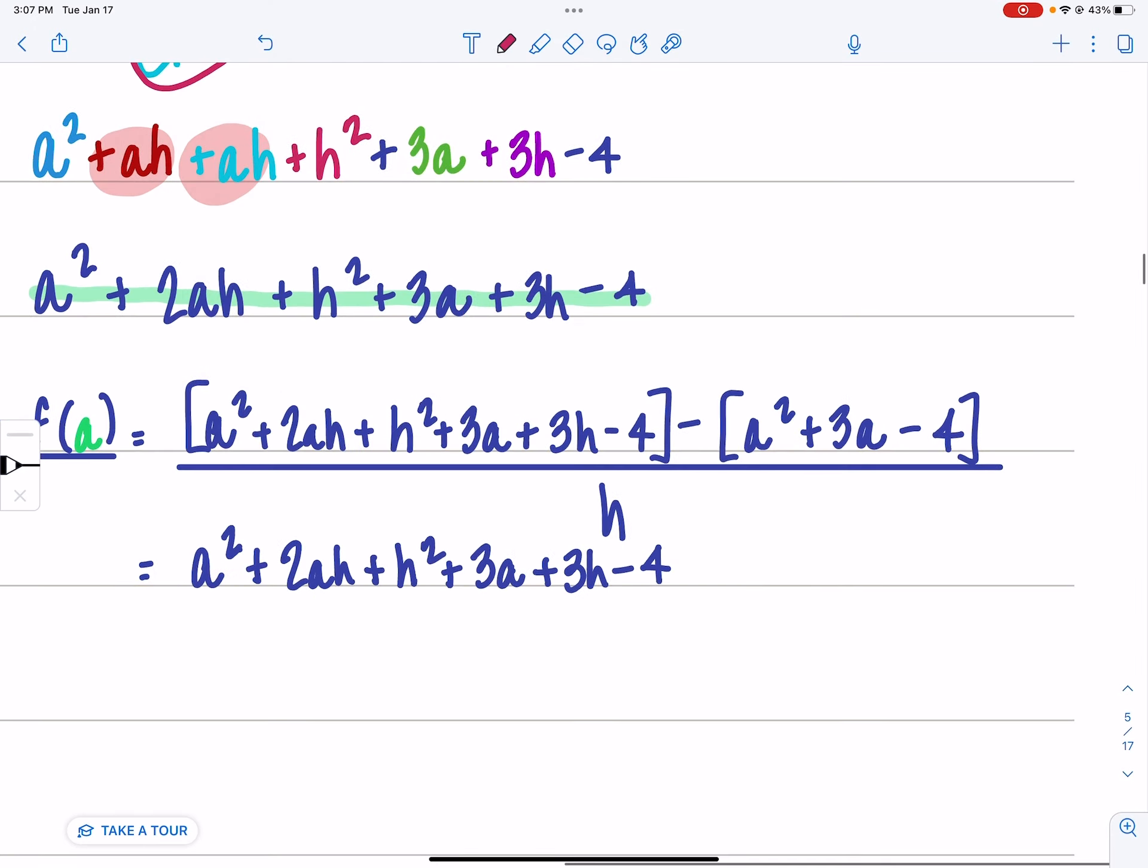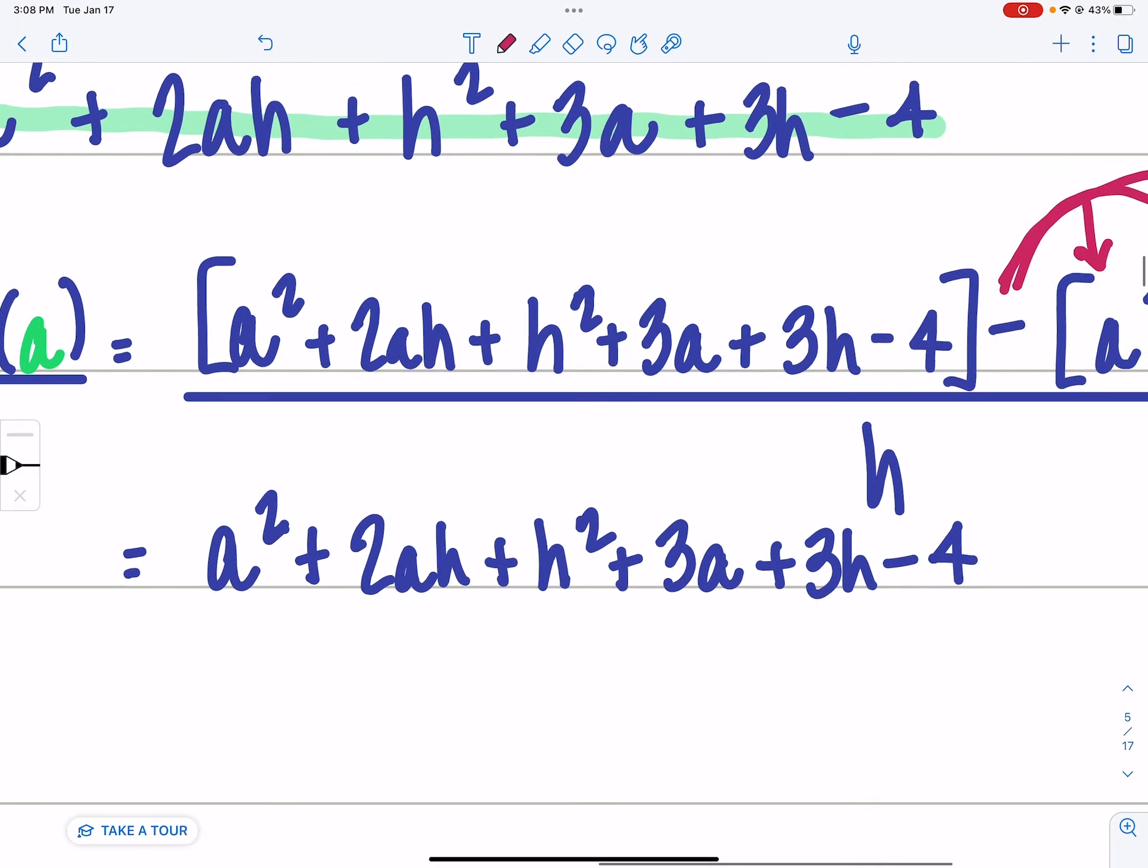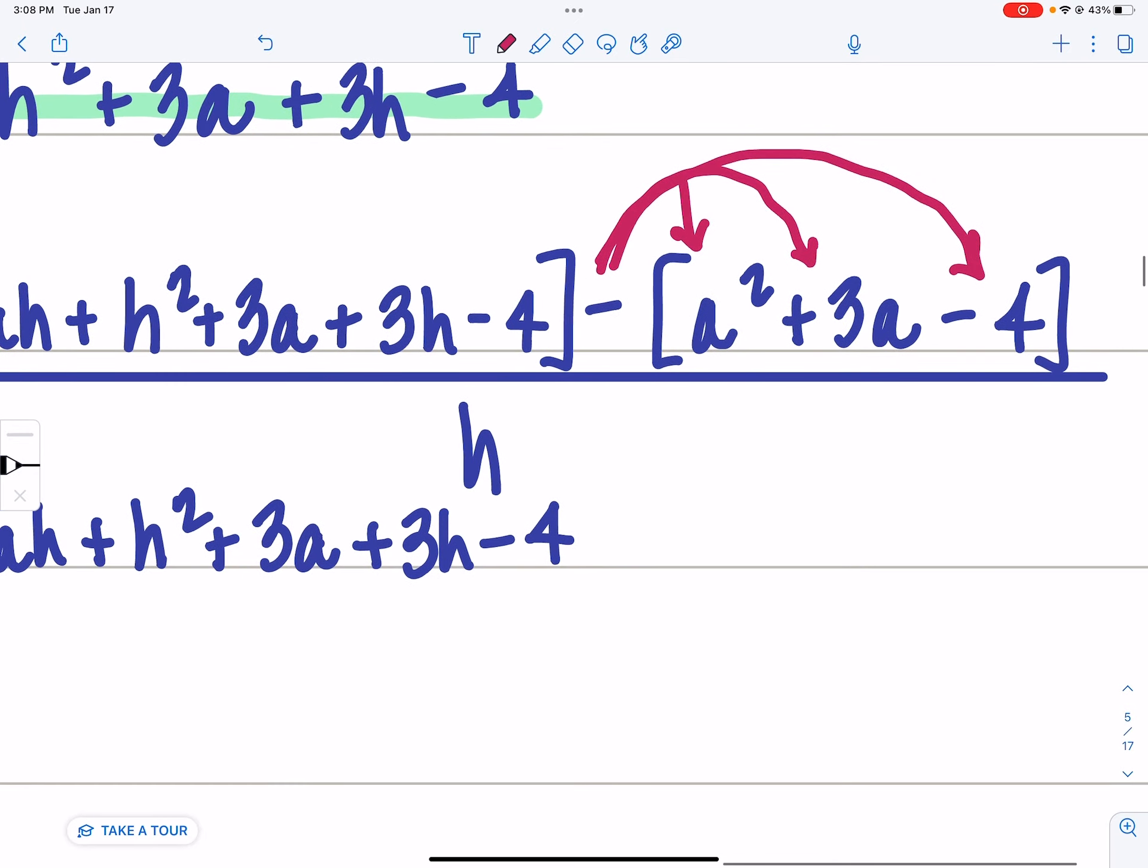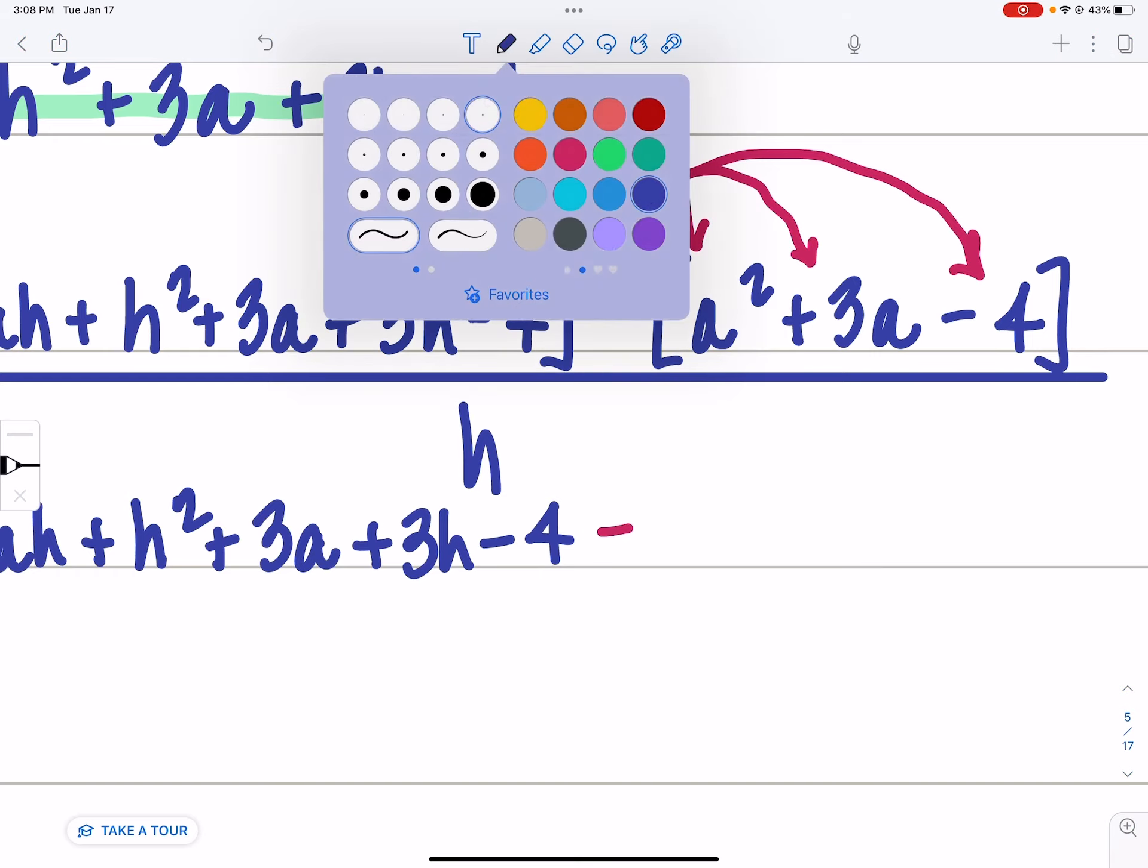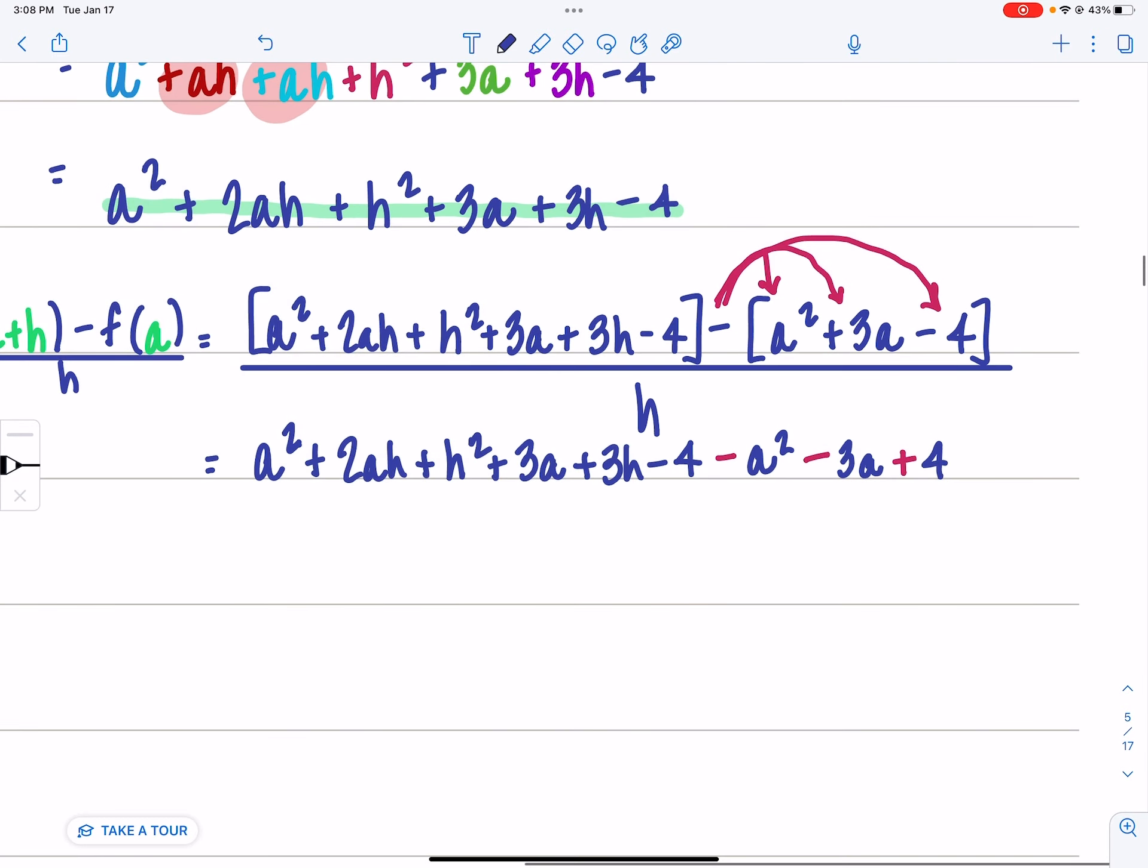But I have to distribute the negative all the way through that set of brackets. So what that's going to do is give me a negative a squared and a negative 3a. And then a negative times a negative is a positive, so I'm going to have a positive four. All of that still goes over h.